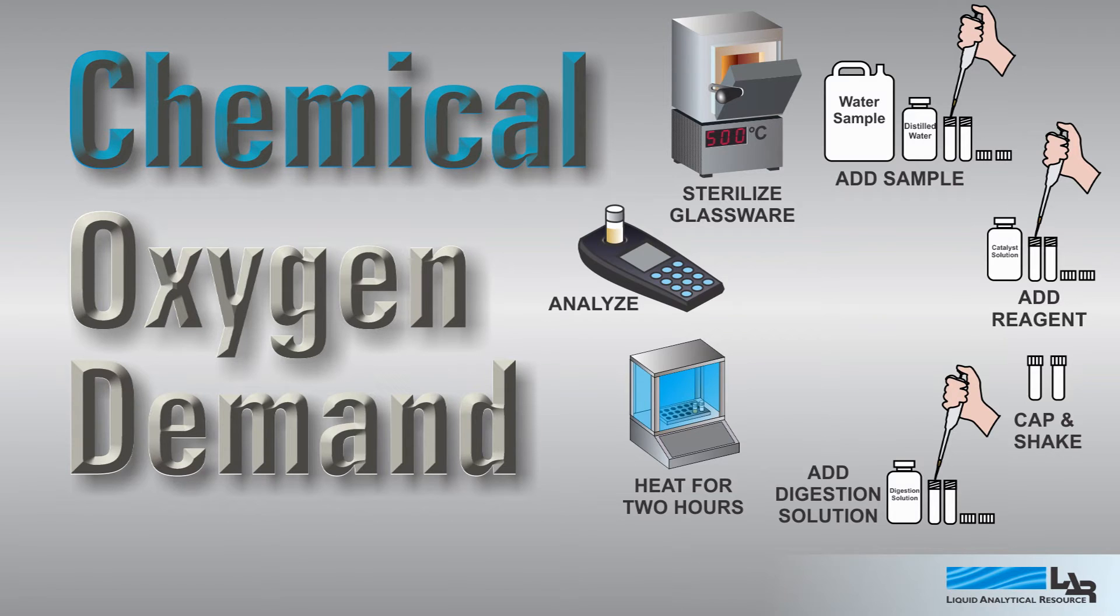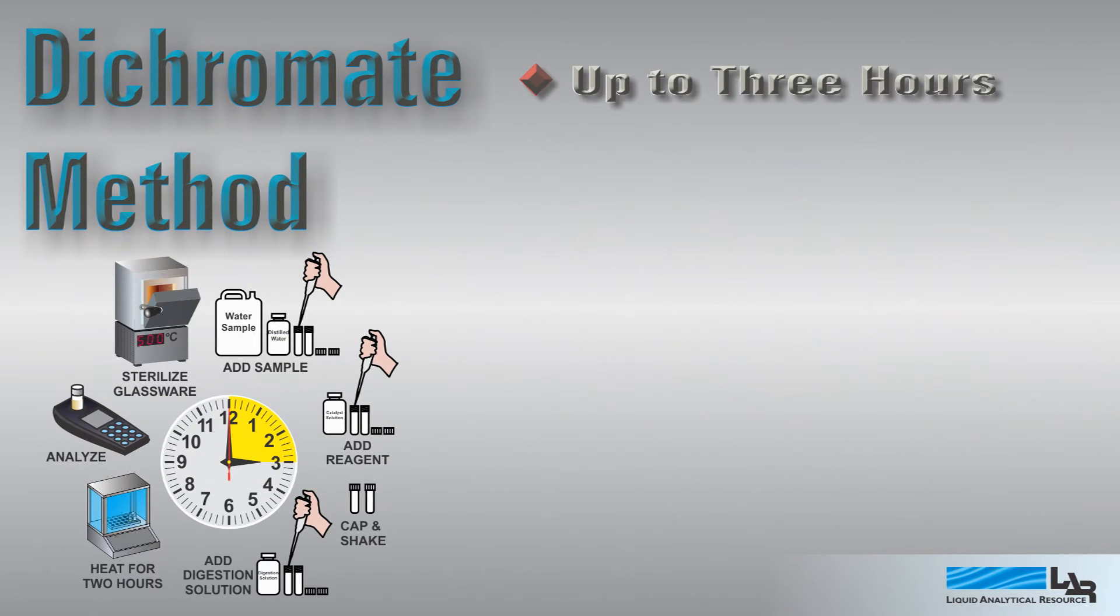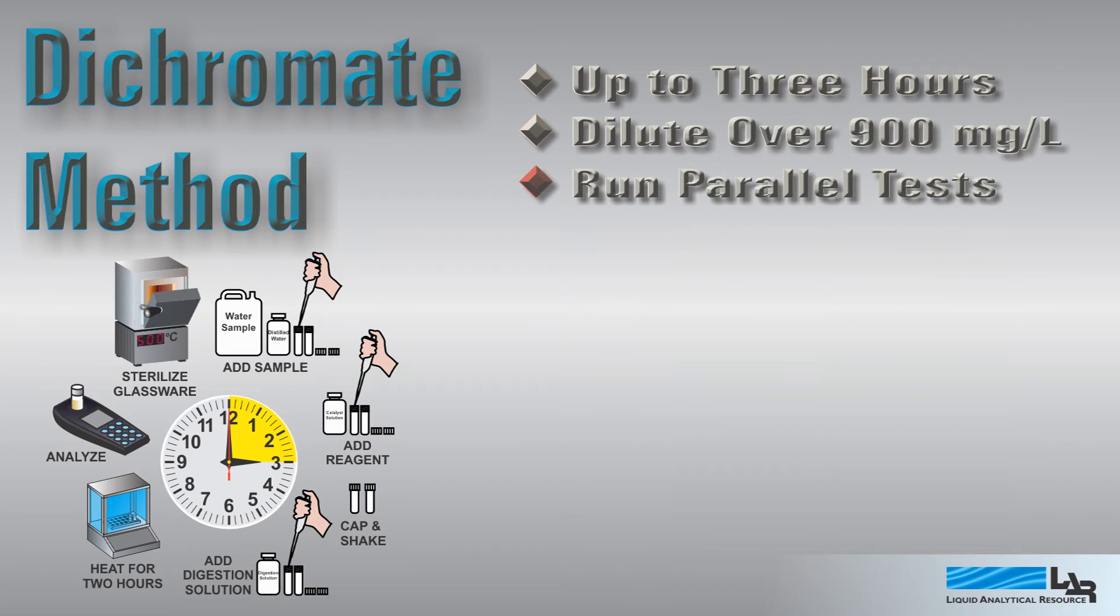While Method 410.4 and related cuvette tests is much faster than testing for BOD-5, it still takes up to three hours to complete. Dilution is required above 900 mg per liter, and parallel duplicate tests are recommended due to poor repeatability.